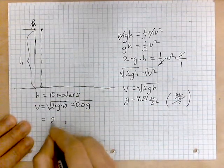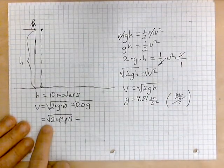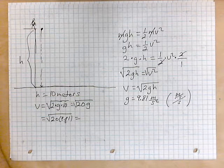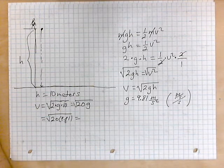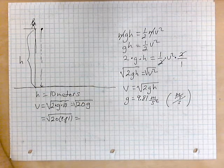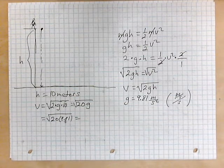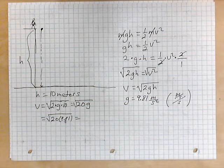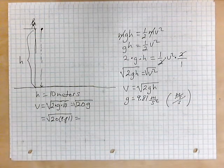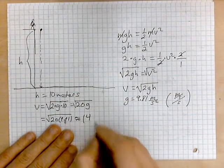So now you can replace G with 9.81 and then we work this out on a calculator. So that is about 14 meters per second.